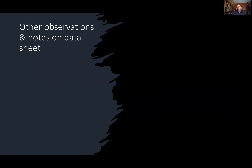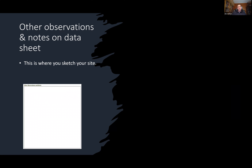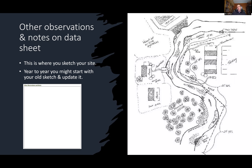There's also a section for other observations and notes, including a site sketch. If you've never done it before, sketch your site. If you've been monitoring a given site year after year, update your sketch. This is an example of a fairly detailed site sketch showing the path of the creek, surrounding buildings, vegetation, inside and outside of curves, and the start and end of the reach being assessed.